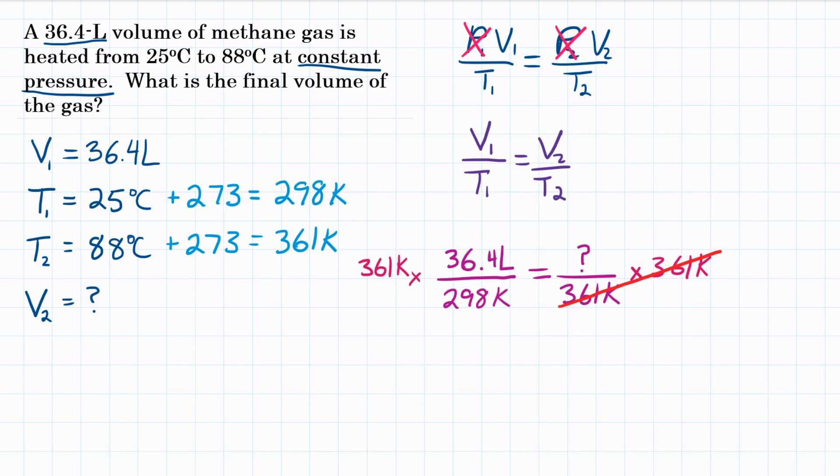So to solve this, we're going to punch in our calculator, 361 times 36.4 divided by 298 equals, and we will get about 44.1.